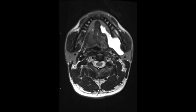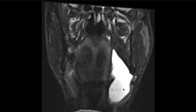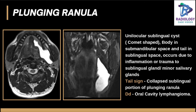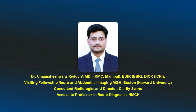Coming to the last case: this is a classical cystic lesion on axial T2 imaging — a case of ranula. A tail sign is appreciated, which represents an enlarged submandibular component of the lesion and a tail-shaped sublingual space component. This is classical in cases of plunging ranula. Differential diagnoses include oral cavity lymphoma and lymphangioma. Whenever you see this comet-shaped lesion or a classical tail sign, you can confidently diagnose a plunging ranula. Thank you very much — hope these cases were useful.